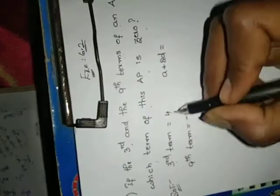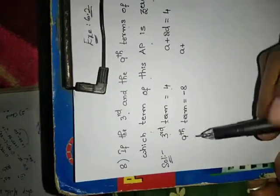Already in the last video I have explained how it will come. Third term means 3 minus 1 = 2. So A plus 2D equals to 4. Again, 9th term means A plus 8D equals to minus 8.